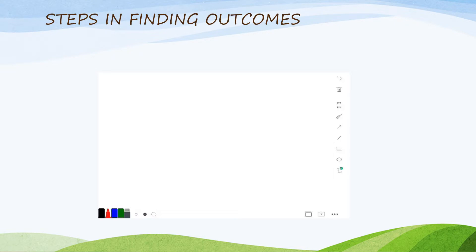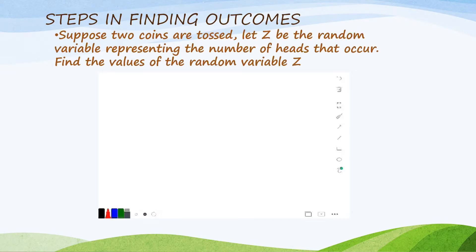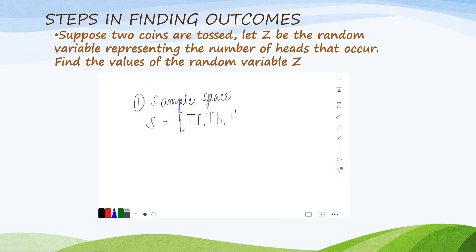For us to deepen our understanding, let's take this example. We're going to apply the steps in finding outcomes. Suppose two coins are tossed. Let Z be the random variable representing the number of heads that occur. Then, find the values of the random variable. First, let us illustrate the given solution. Let us indicate first the sample space, using the letter S. We have tail-tail, tail-head, head-head, and head-tail.